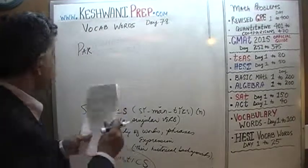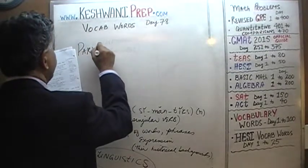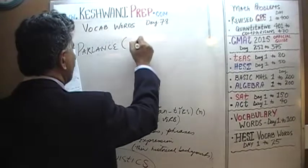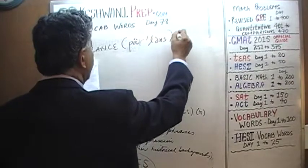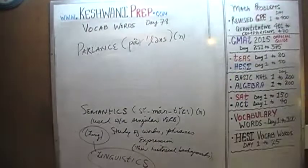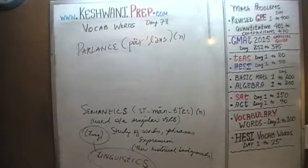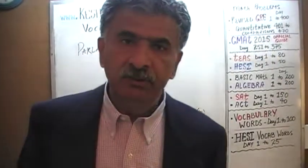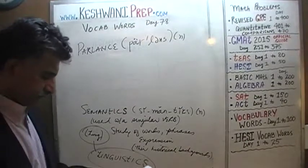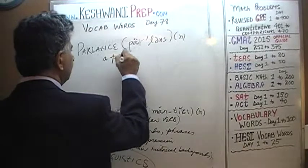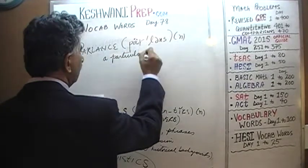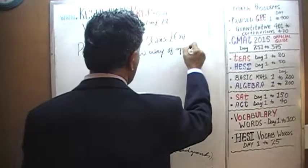The next word we're going to learn is parlance. Parlance is a way of speech, a dialect — the way a language is spoken in a certain region. That's called a parlance: a particular way of speaking.